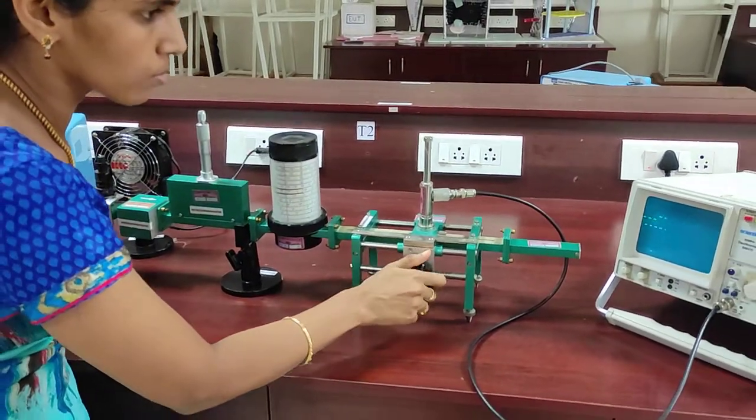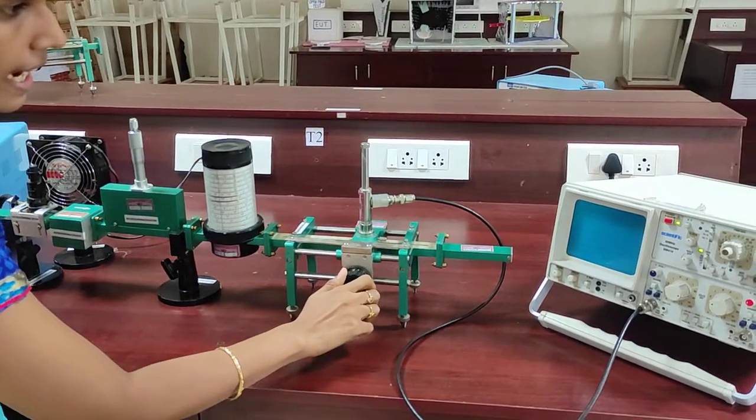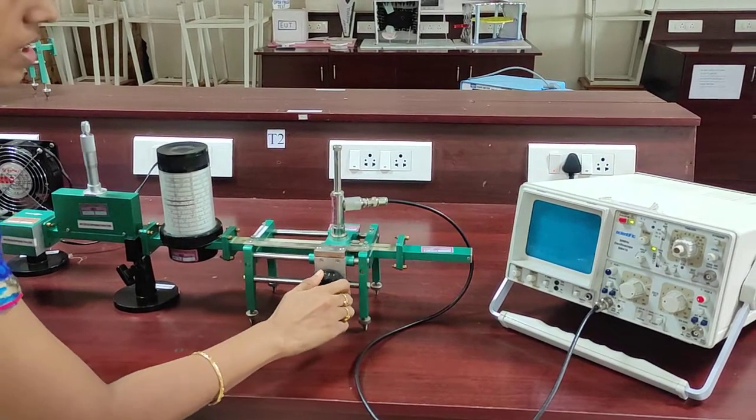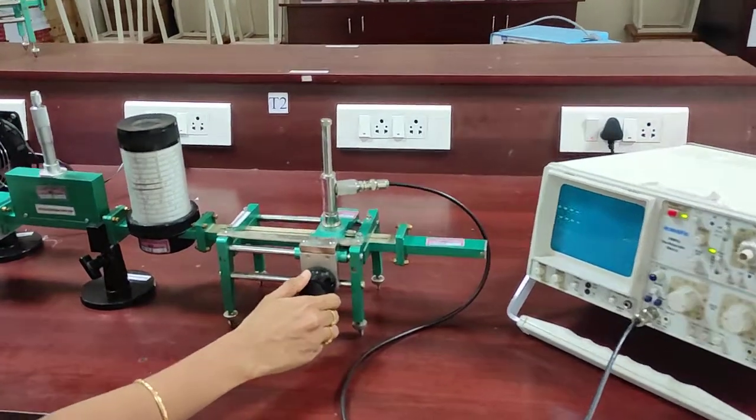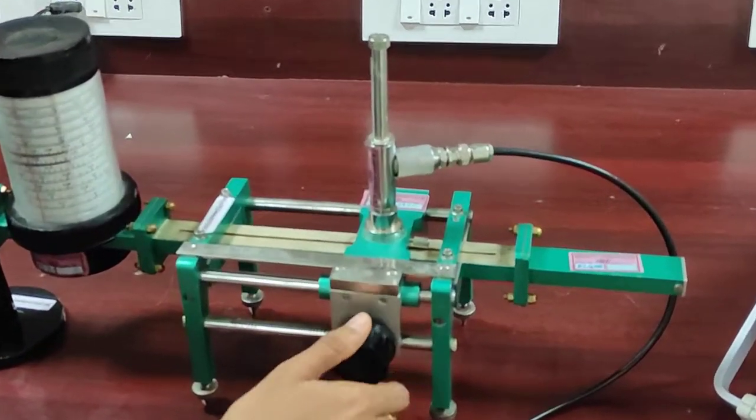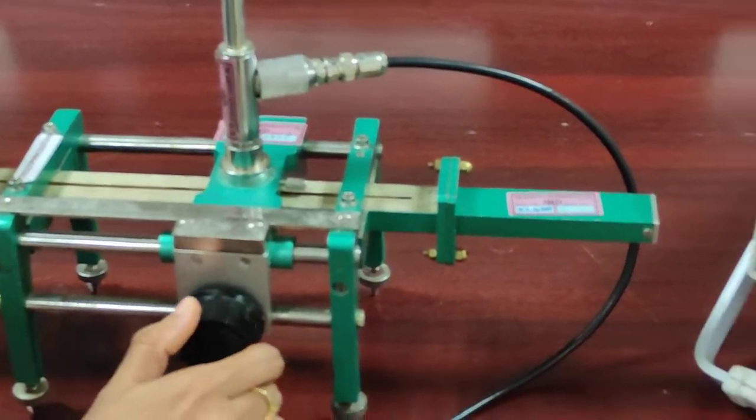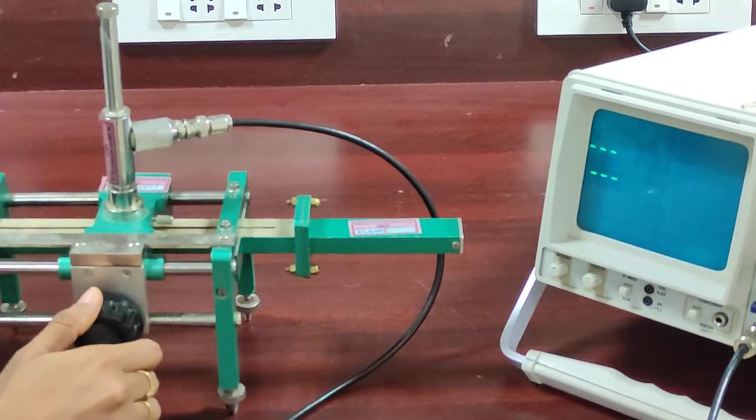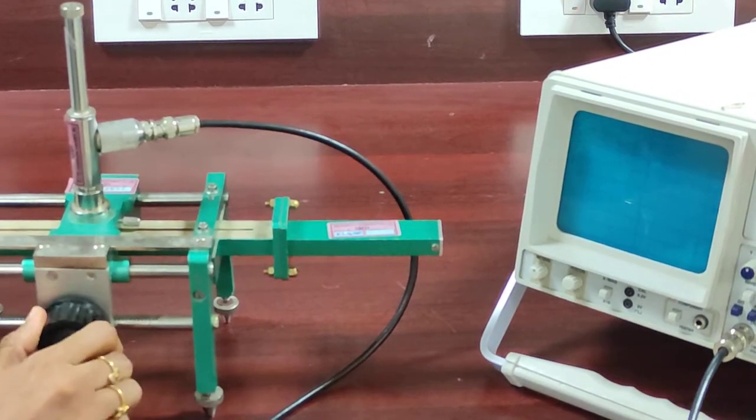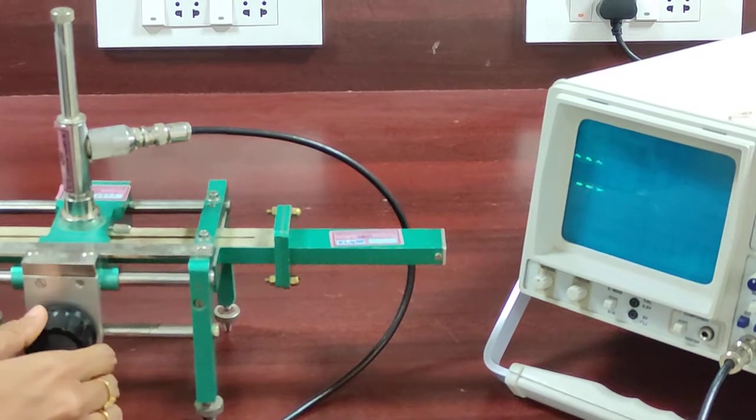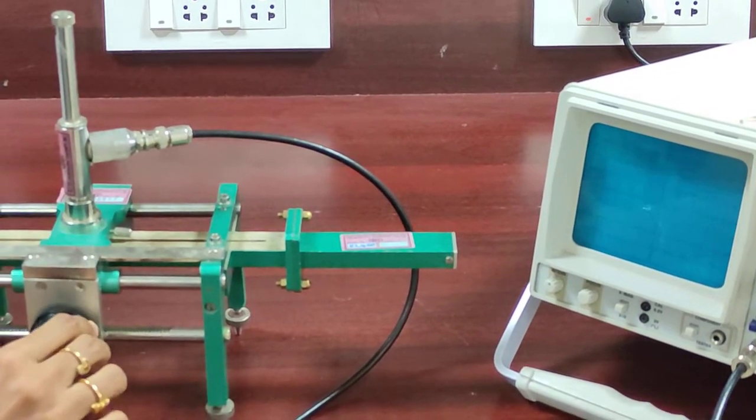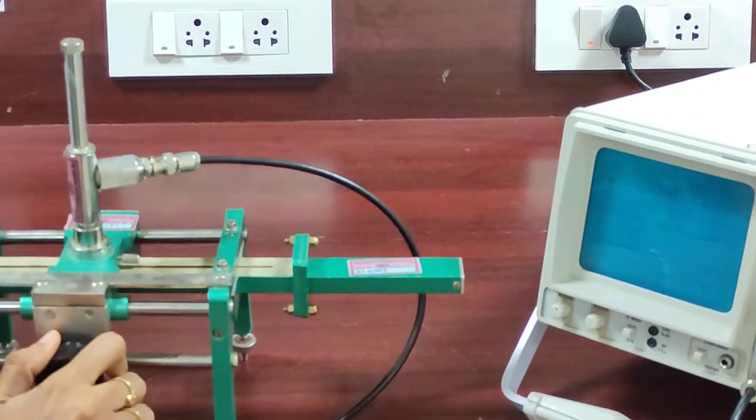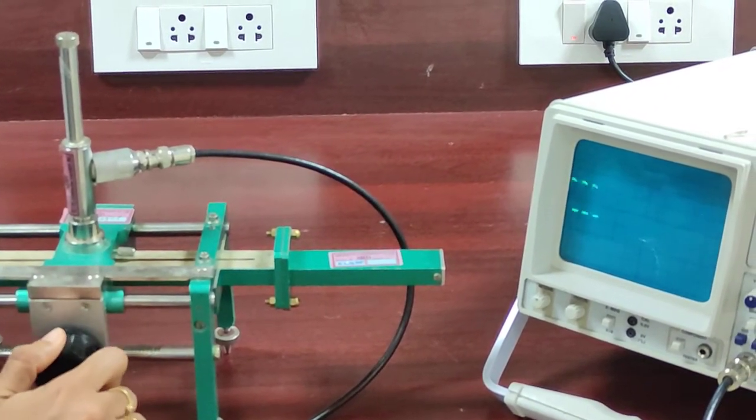I am repeating. Just, you are going to move this slotted section and you are going to look for the maximum and minimum value. Now I am getting a maximum value. I am checking for next maximum also. This is the maximum value I am getting.